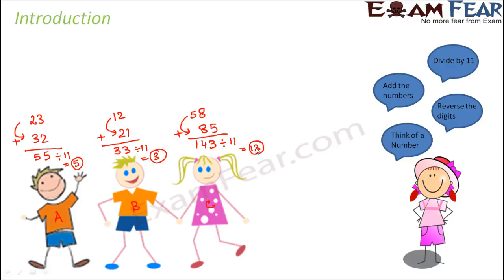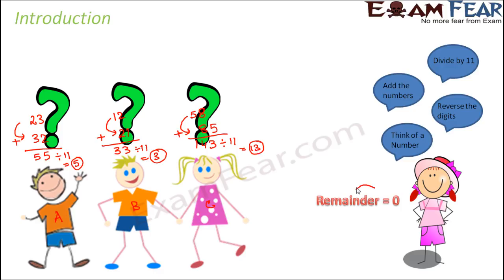Nothing of this is known to the teacher because they are doing it on their own secretly. The teacher doesn't know which number A, B, or C thought of. But surprisingly, even though the teacher doesn't know what's going on in their mind, the teacher could tell that the remainder for all of them would be 0. And that is exactly the case.